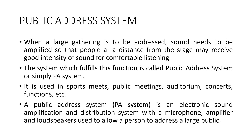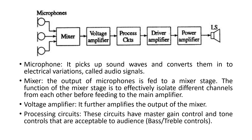This is the block diagram of a public address system. A public address system consists of the following blocks: microphone, mixer, voltage amplifier, process circuit, driver amplifier, power amplifier, and finally loudspeaker. We will look at each block one by one.